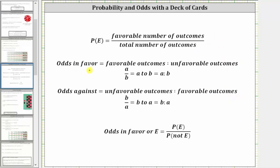The odds in favor of an event is equal to the ratio of the number of favorable outcomes to the number of unfavorable outcomes, and the ratio can be expressed in fraction form using the word 'to' or using a colon. The odds against an event is equal to the ratio of the number of unfavorable outcomes to the number of favorable outcomes.